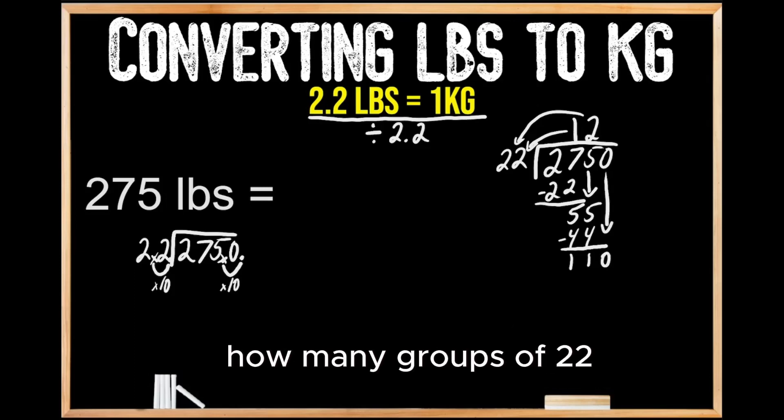Now we're thinking how many groups of 22 can we make out of 110? Well, we can make 5 equal groups of 22 out of 110. So when we multiply 5 times 22, we get 110, and then when we subtract, we're left with 0.